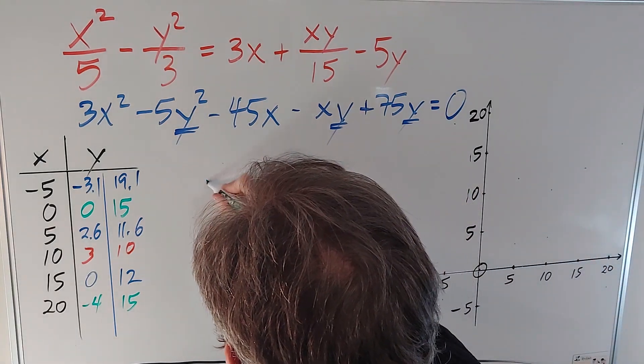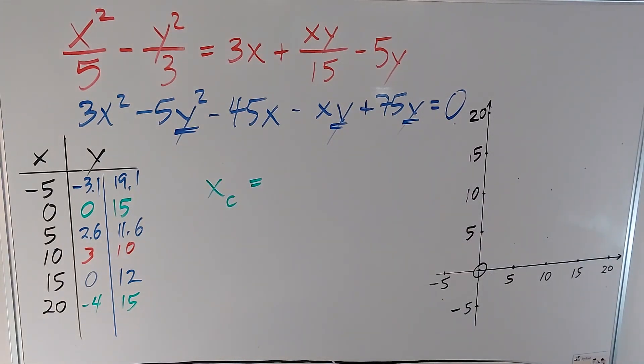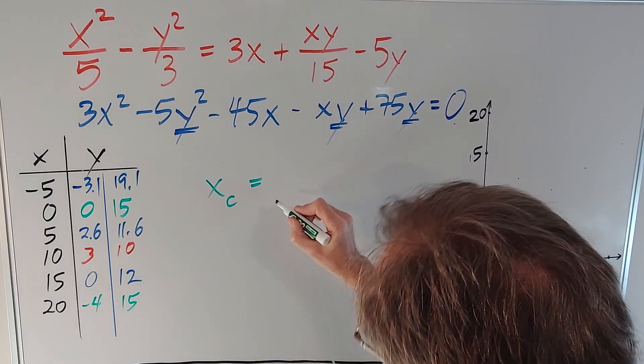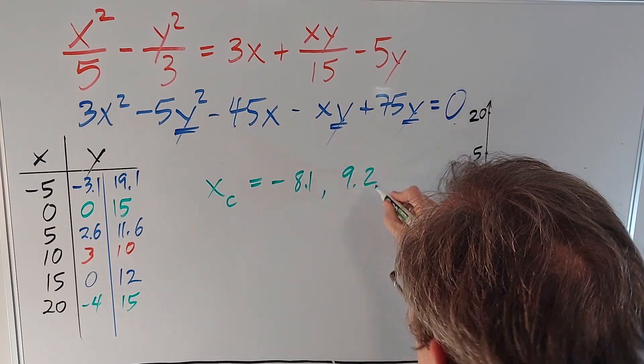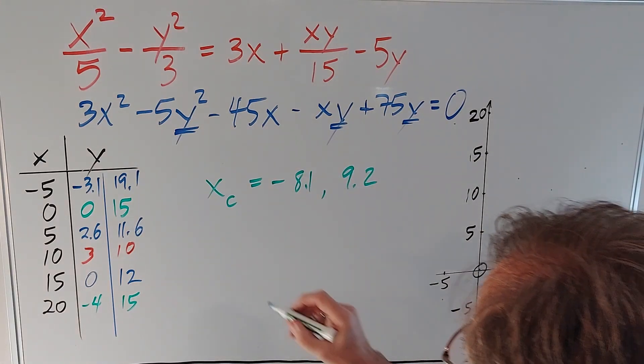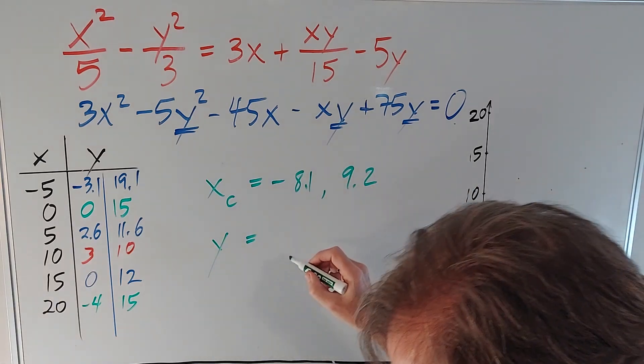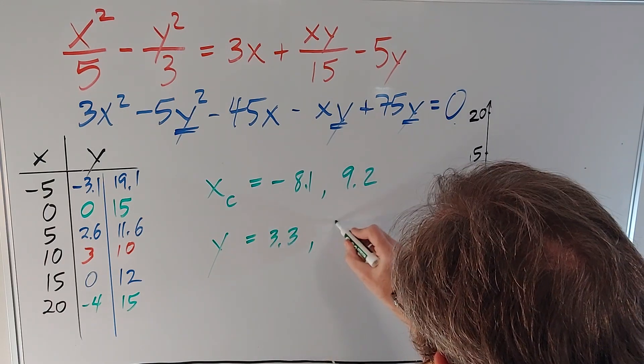The critical values, the x values for the max and the min, are 8.1 and 9.2, and the corresponding optimal values are 3.3 and 9.1.